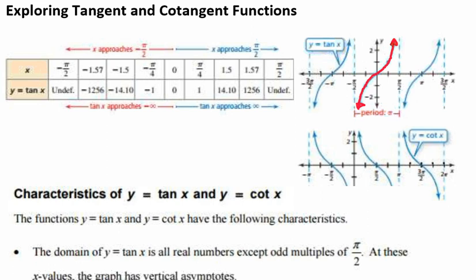Similarly, with our cotangent function, we can see that as x approaches 0, our cotangent function approaches positive infinity, and as x approaches pi, our cotangent function approaches negative infinity.